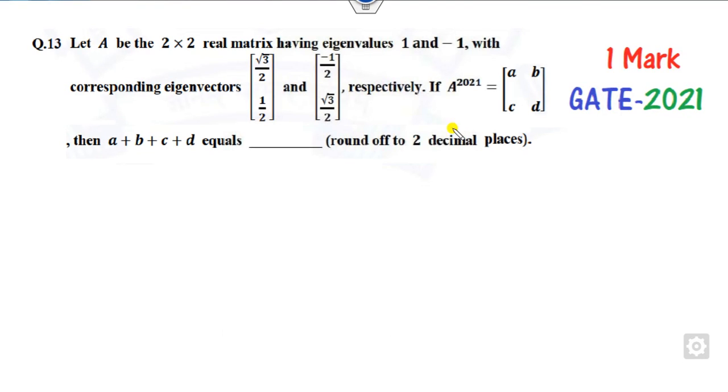Hello everyone, welcome to this eigenvalue question from GATE 2021, a 1-mark problem. It's very simple once you think about it. The eigenvalues of matrix A are given, and you need to find this value.